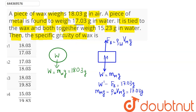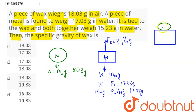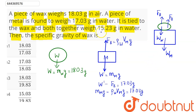It says the metal and wax are tied together and both weigh 15.23 grams in water. The forces acting are the weight of the wax, the weight of the metal, the buoyant force on the wax, and the buoyant force on the metal. The apparent weight of the combined system is 15.23g.